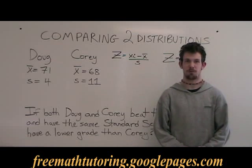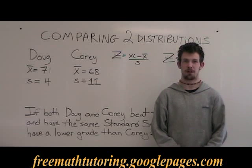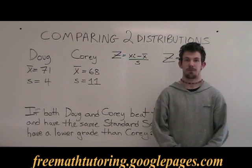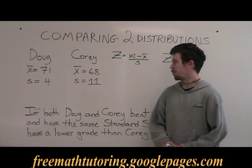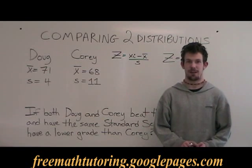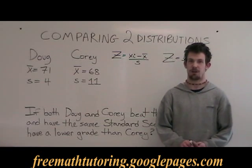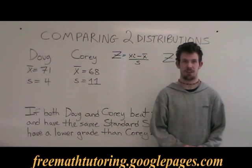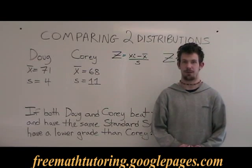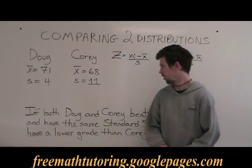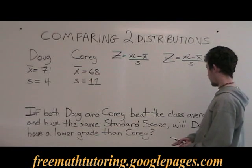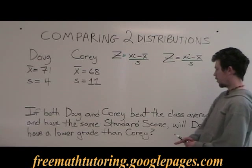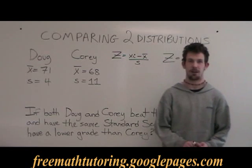This is how you compare two distributions using the z-score formula while having two unknowns. In this first example, Doug's class has an x-bar of 71 and a standard deviation of 4. Corey's class has an x-bar of 68 and a standard deviation of 11. If both Doug and Corey beat the class average and both have the same standard score, will Doug have a lower grade than Corey?